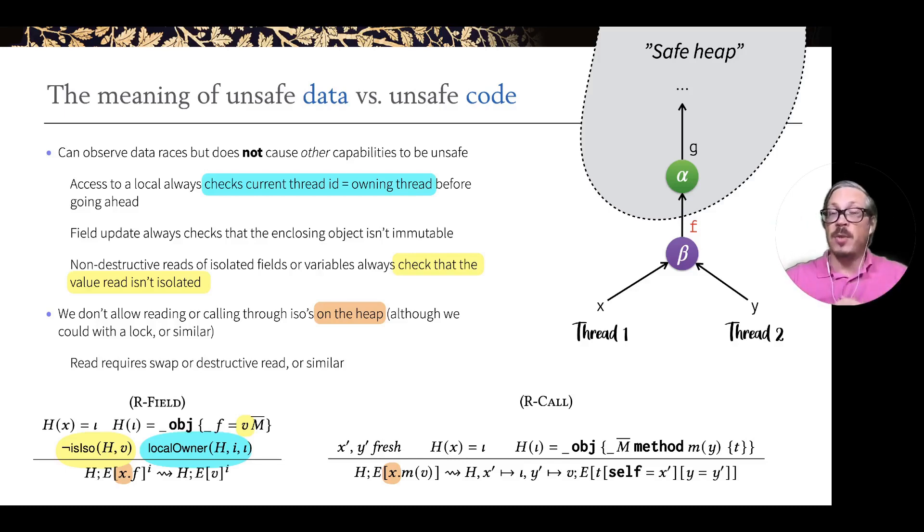If both threads X and Y are trying to get this F resource at the same time, only one thread will succeed. We will observe a race on the F, but we will protect the aliasing invariant of alpha. So alpha will still only be visible to one thread and will not suffer a data race.